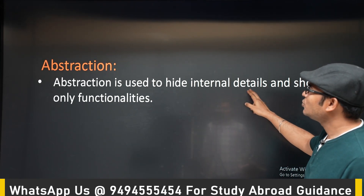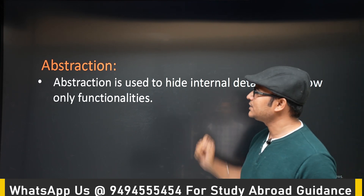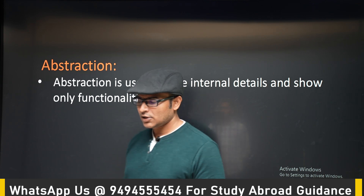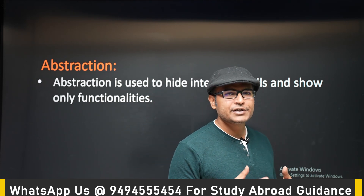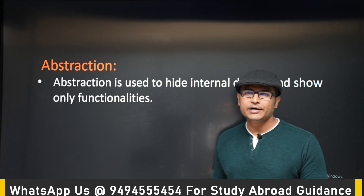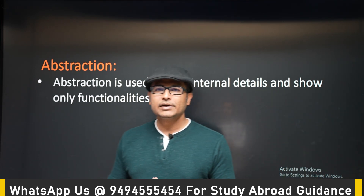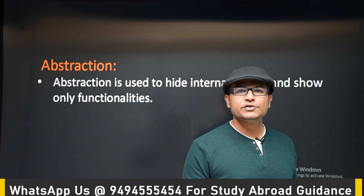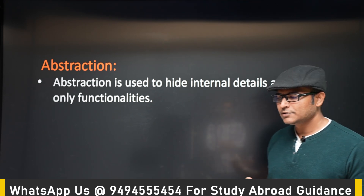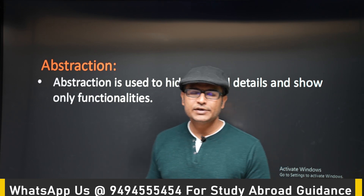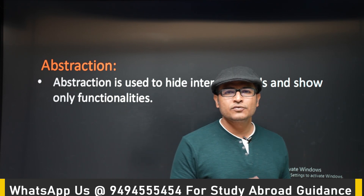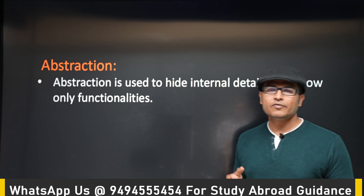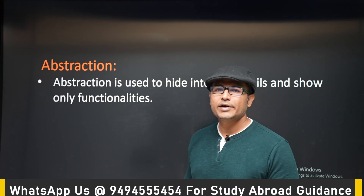Abstraction is used to hide the internal details and show only functionality. For example, when you create an object of a class, you don't need to understand how the class is written or how it is implemented internally. You only know it will perform the necessary task. For instance, if there is a method called sort, internally it could be bubble sort, insertion sort, merge sort, or quick sort — but all you know is that sort will sort the list. You don't need to know the internal details — that is abstraction.